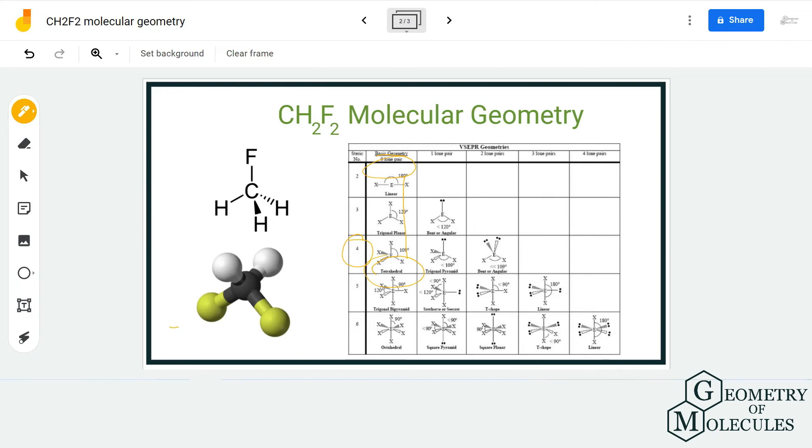CH2F2 has a tetrahedral molecular geometry. Even if you look at its 3D structure, all these atoms are spread out evenly to avoid any uneven distribution of charges, which results in tetrahedral molecular geometry.